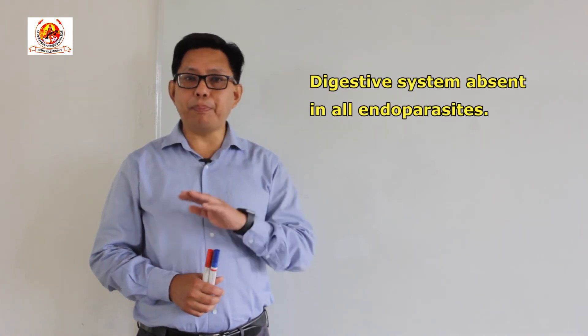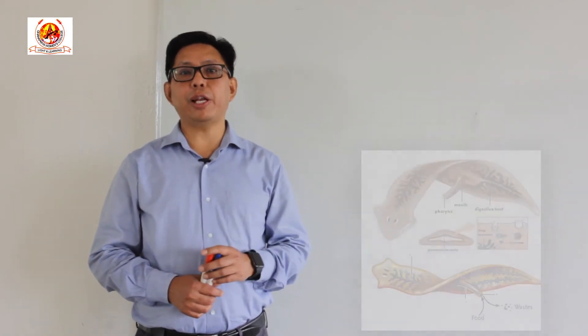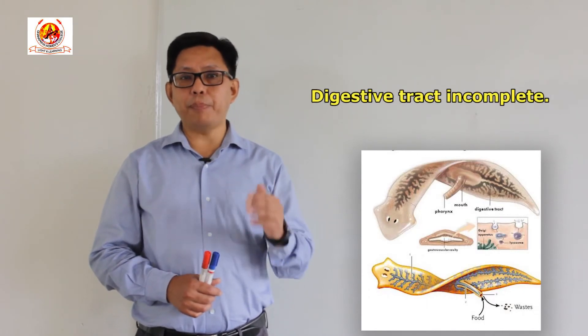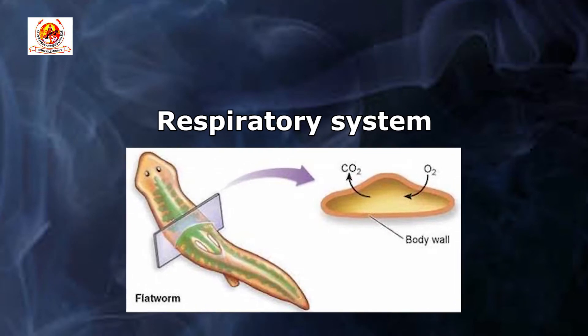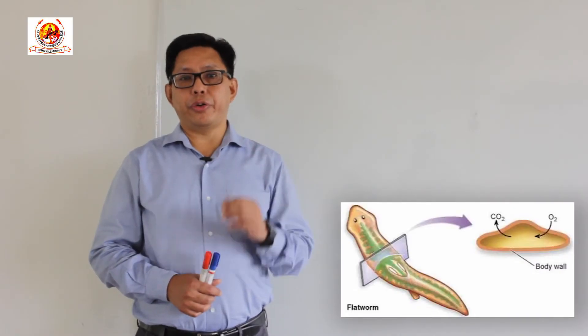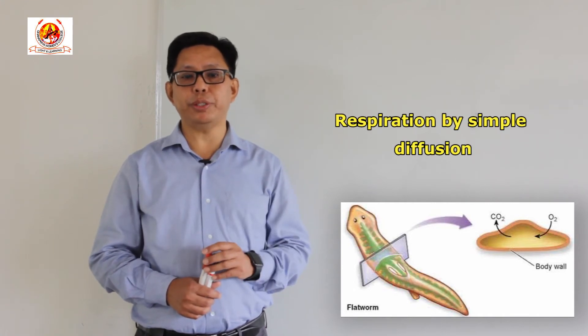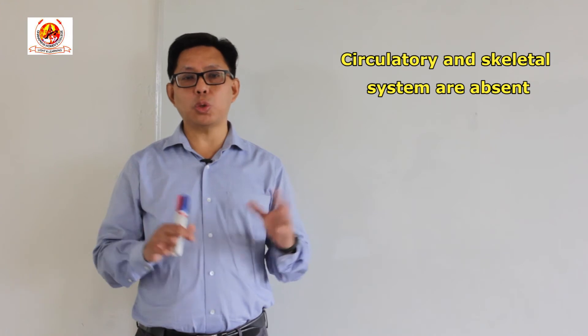Another important character is that the digestive system is completely absent in all the endoparasitic forms. But it may be present in free-living forms, and when present it is said to be incomplete — meaning only the mouth part is present but there is no anus. Respiration is by means of simple diffusion through the body surface. There is no skeletal system as well as no circulatory system.